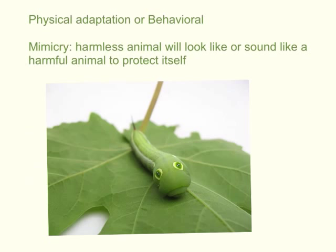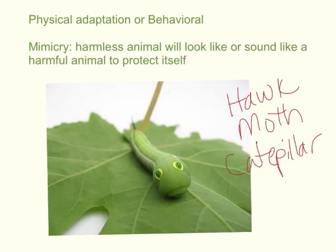There's one last type of adaptation that could fall under either physical or behavioral, and that's mimicry. You might have a younger sibling who tries to mimic everything you do — it relates in the ecosystem world as a way animals will look like or sound like other animals in order to protect themselves. For example, do you know what this is? Is it a snake? Actually, it is not — this is a hawk moth caterpillar. It looks like a snake because of its features: it has colorings on top that make it look like it has eyes like a snake, which help keep other predators away.